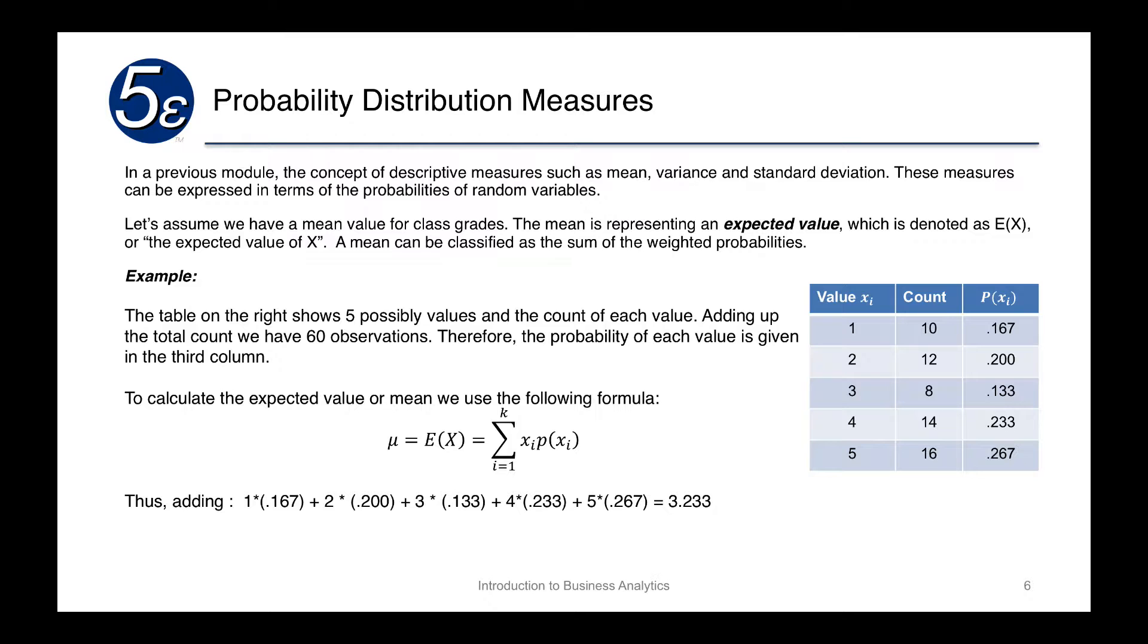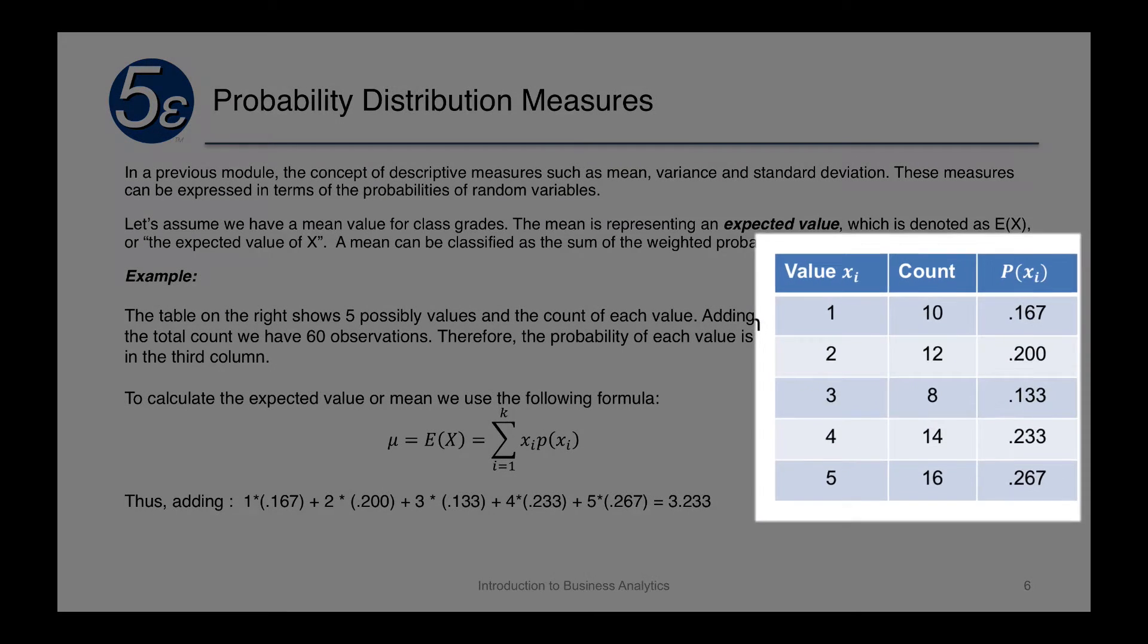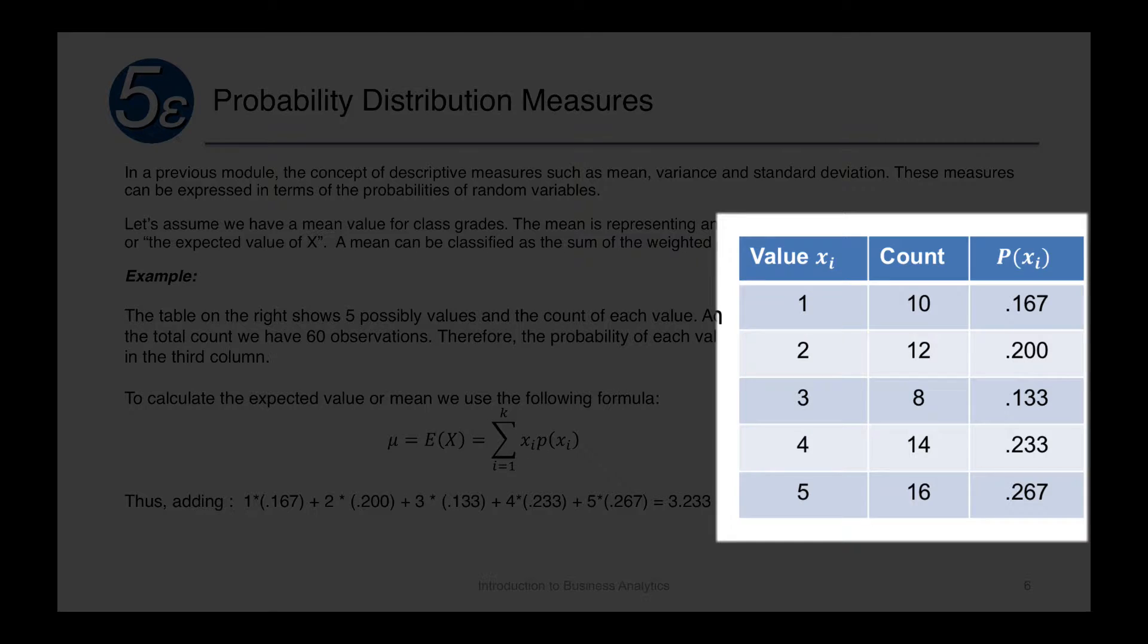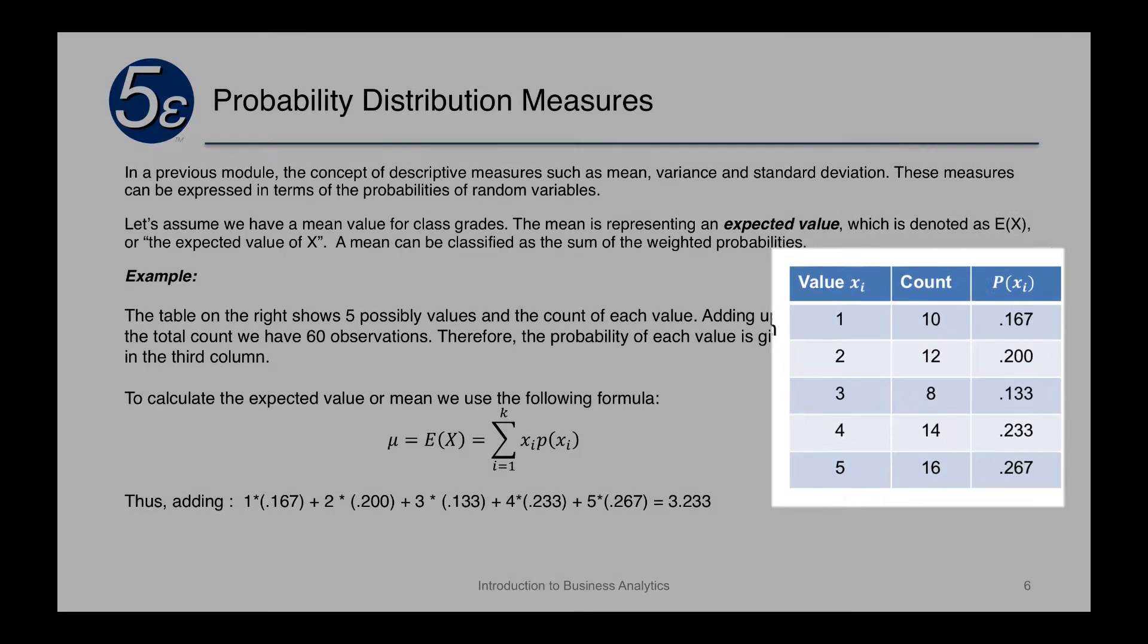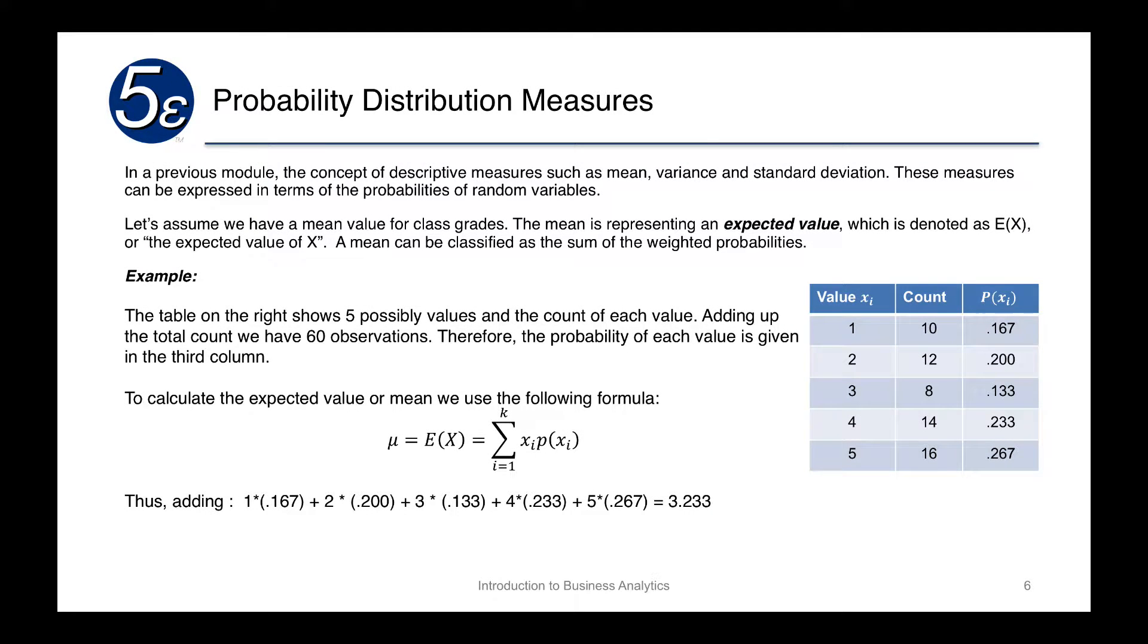Again, being discrete, we have the individual values of 1, 2, 3, 4, and 5. The table on the right shows five possible values and the count of each value. Adding up the total count, we have 60 observations. Therefore, the probability of each value is given in the third column.